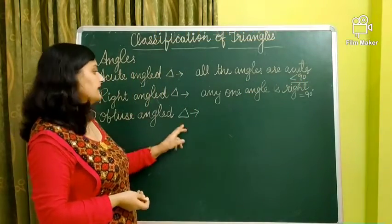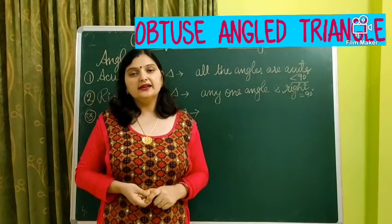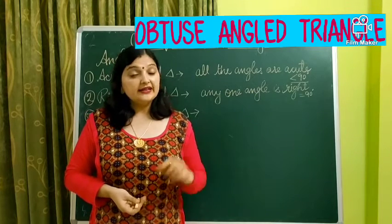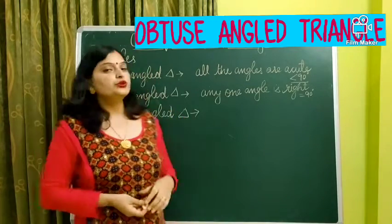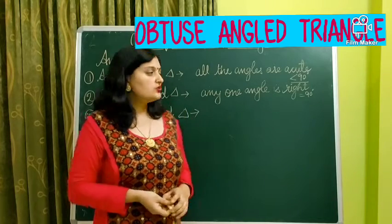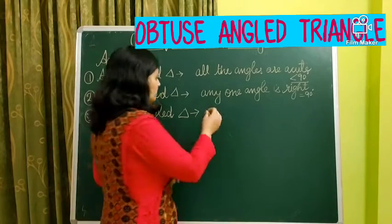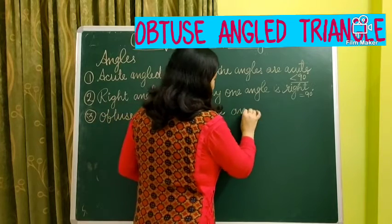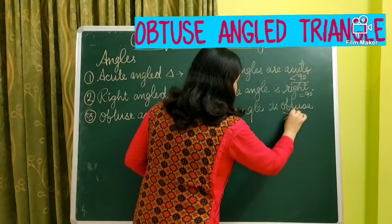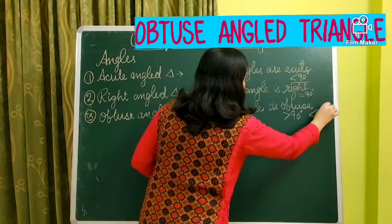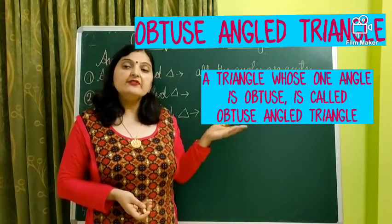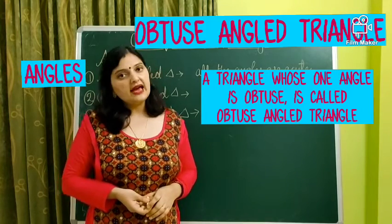Now the third one is obtuse angled triangle. Obtuse angled triangles are those triangles having any one angle that is obtuse. An obtuse angle means greater than 90 degrees but less than 180 degrees. So the definition of obtuse angled triangle is: a triangle having any one angle obtuse is called an obtuse angled triangle.